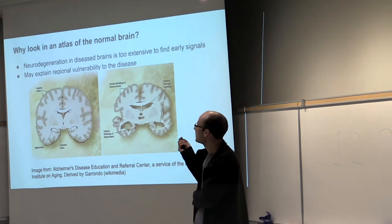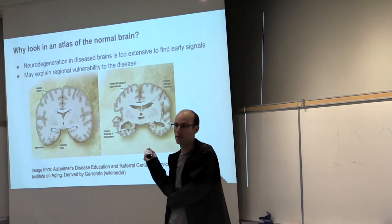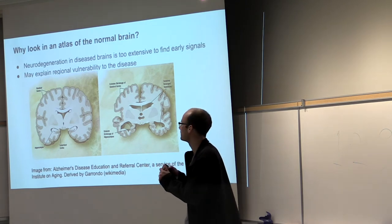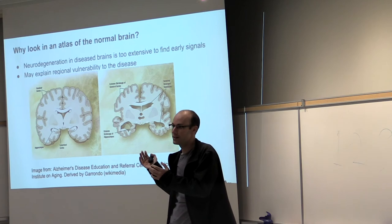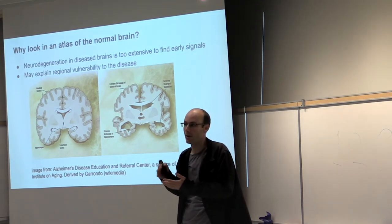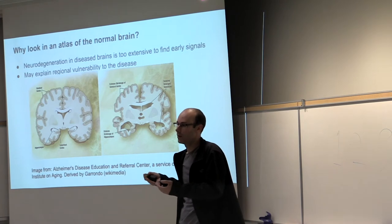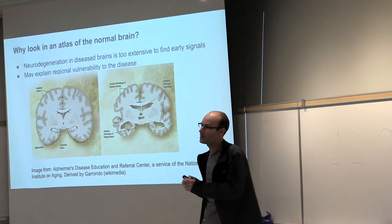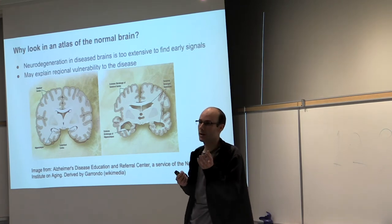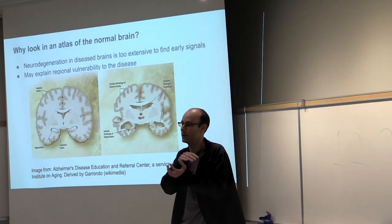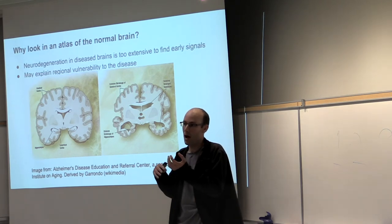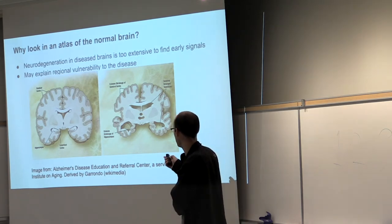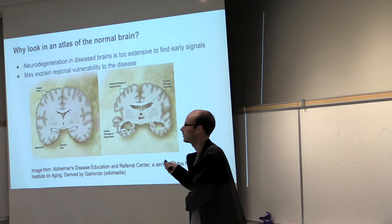One question is: why are we looking in the normal atlas rather than Alzheimer's brains? The atlas is anatomically comprehensive — you have the whole brain. If you look in disease brains, it might be too late, because neurodegeneration has gone on for decades and you might see only after-effects. What this might explain instead is regional vulnerability — why this region shows up in FDG-PET because it's not protected as well as other brain regions. It would be good to know how other parts of the brain are being protected even in the normal brain.